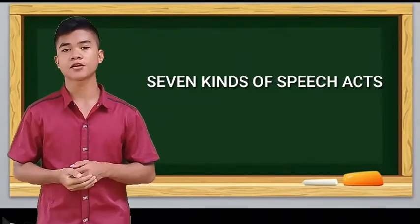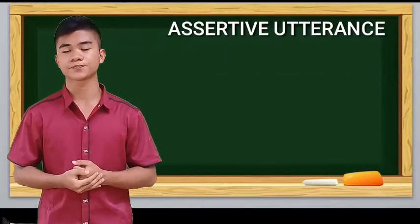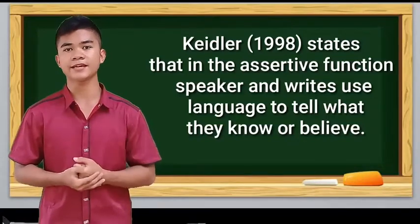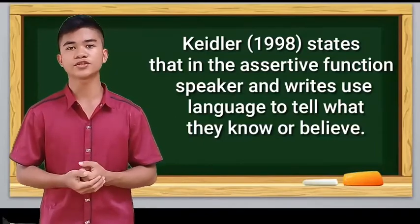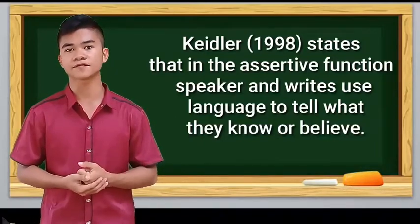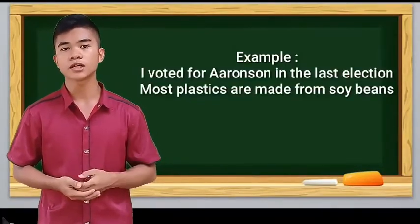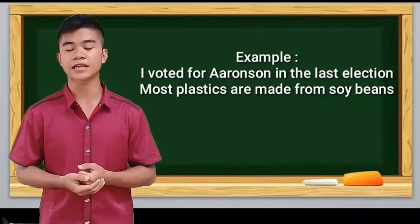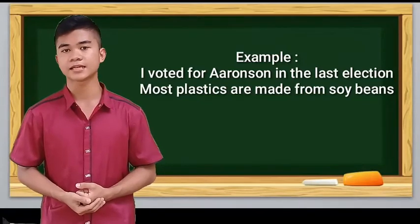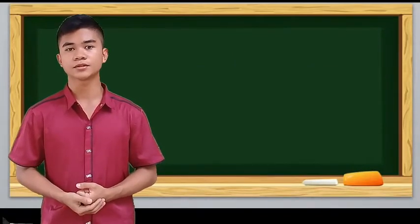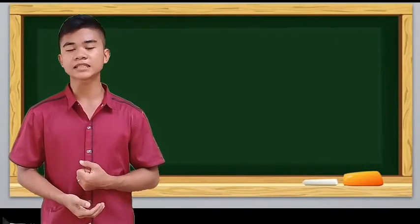Next is the seven kinds of speech acts. The first is assertive utterance. According to Cater 1998, in the assertive function speakers and writers use language to tell what they know or believe. Assertive language is connected with fact. Example: I voted for a Republican in the last election. The next example is: Most plastics are made from the sorbents chopped from like fossils, a smile from the beach. So this assertive utterance can be true or can be false.